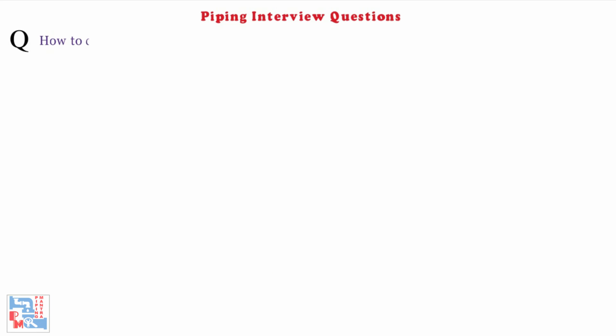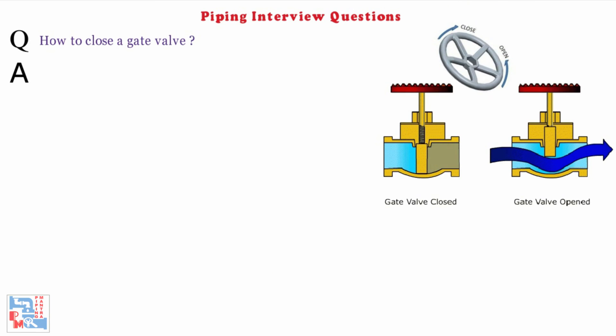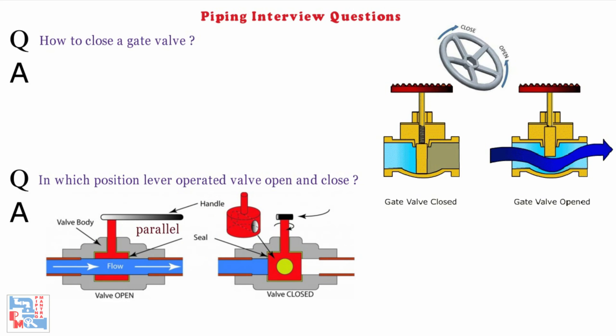Next: How to close the gate valve? Turn the hand wheel in clockwise direction. Next: In which position do lever operated valves open and close? If the lever is parallel to the pipe, it is in open condition, and if it is perpendicular to the pipe, it is in closed condition.